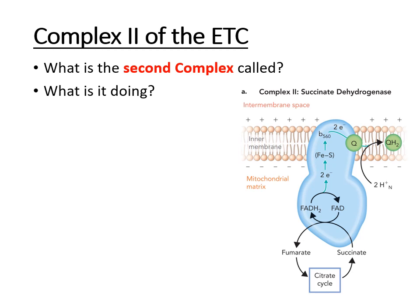Coenzyme Q collects electrons in both complex one and complex two so it can transfer them in complex three. In this step, succinate is oxidized — it loses electrons — and coenzyme Q is reduced — it gains electrons. LEO says GER.